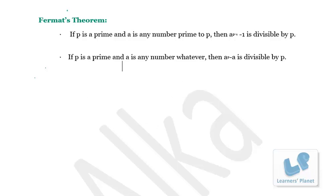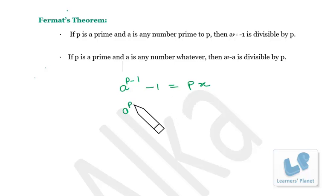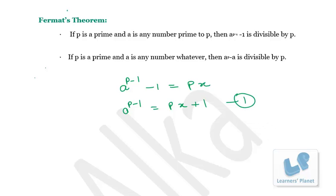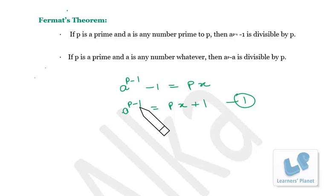So what exactly Fermat's theorem says: A raised to P minus 1, minus 1 is divisible by P, which means it equals P times X. So A raised to P minus 1 equals P·X + 1. That means if A raised to P minus 1 is divided by P, the remainder will be 1, provided P is prime. Note this condition carefully — we cannot apply this theorem everywhere. P must be prime.